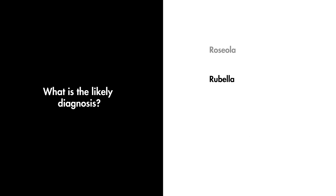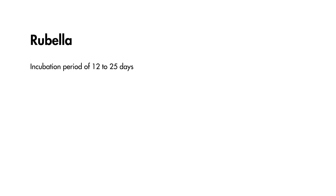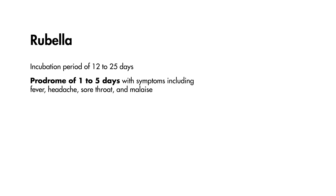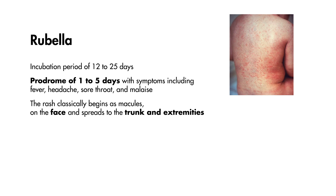This boy has rubella, also known as German measles. Rubella has an incubation period of 12–25 days, where people typically report having a prodrome of 1–5 days with symptoms including fever, headache, sore throat, and malaise. The rash classically begins as macules on the face and spreads to the trunk and extremities.